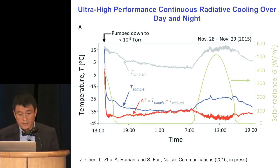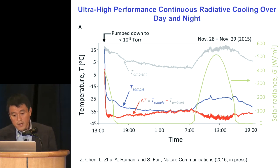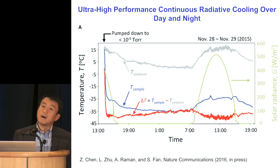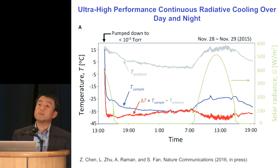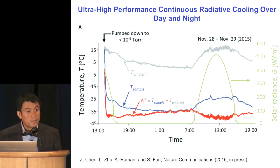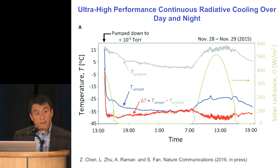One of the interesting points about this system is that the maximum temperature reduction actually occurs when the ambient temperature is the hottest — around noontime. This makes sense because if you cut out all other heating pathways into the sample, the sample tries to pin its temperature to the universe and doesn't care about the ambient temperature. So if the ambient temperature is hotter, the temperature reduction is actually larger as well. This points to very unusual opportunities for using this passive structure for thermal management.